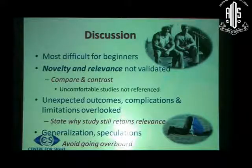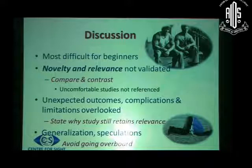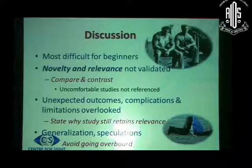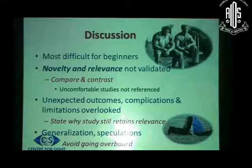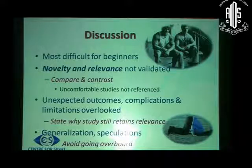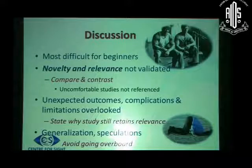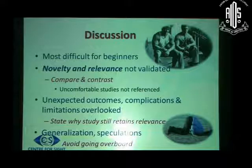Discussion is the most difficult part for authors. You have to compare and contrast yourself with the existing literature and show what is new in this study compared to existing literature, and how it is relevant for the reader. Unexpected outcomes, complications, and limitations should be stated and discussed, and we must state why the paper still retains relevance despite its limitations. On the other hand, we sometimes go overboard with generalization, speculation, and conclusions, which again is a cause for rejection.